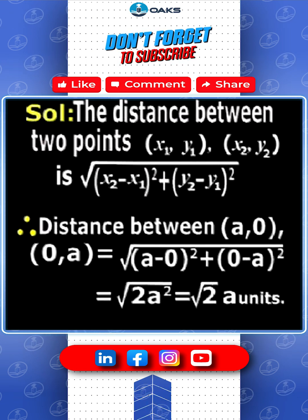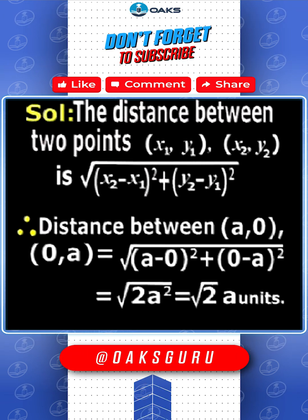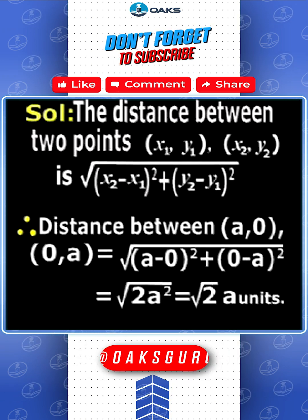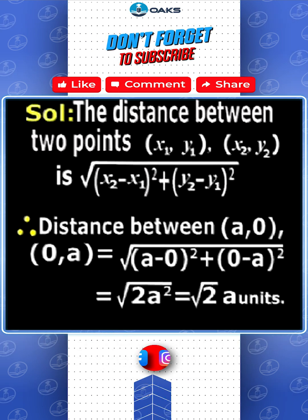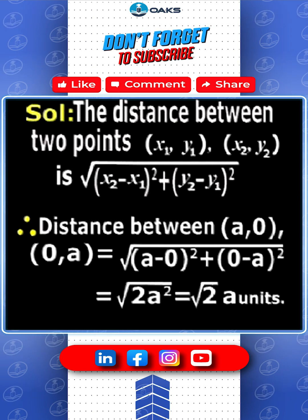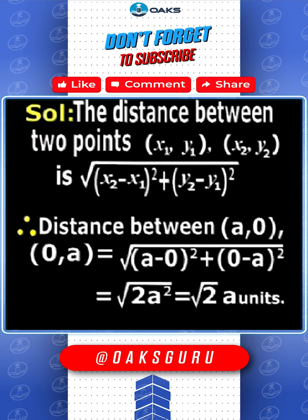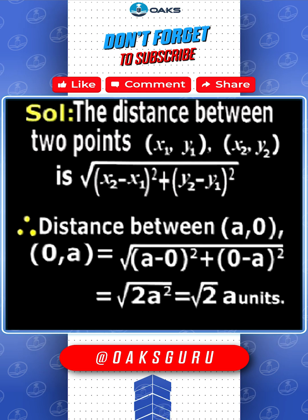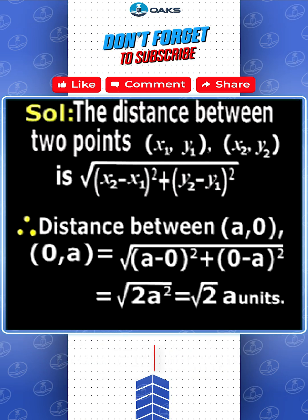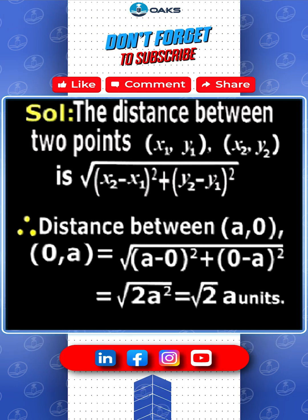Therefore, the distance between (a, 0) and (0, a) is equal to the square root of (a minus 0) whole square plus (0 minus a) whole square, which equals root 2 times a units.